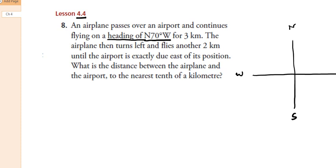The heading refers to a line that starts at the center point. You start at the north direction, and then you go 70 degrees towards the west direction. So the heading is N70°W — that's where this line is drawn.